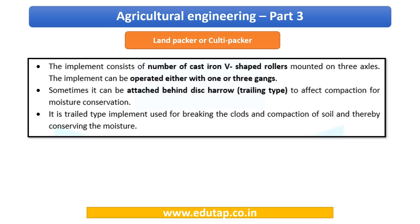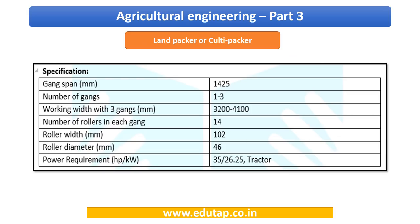The land packer or culty packer consists of a number of cast iron V-shaped rollers attached to axles. This implement can be attached behind a disc harrow. The power requirement is an important data point — kindly make note of it.